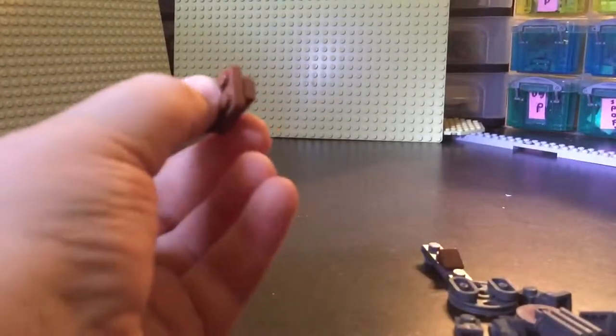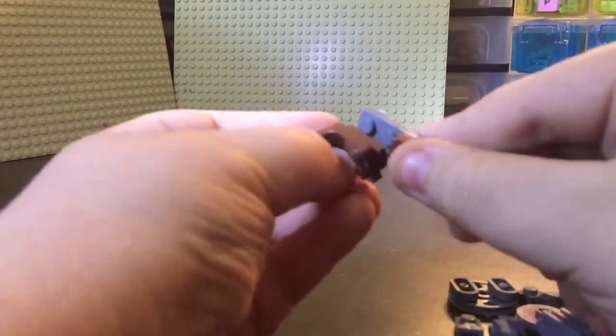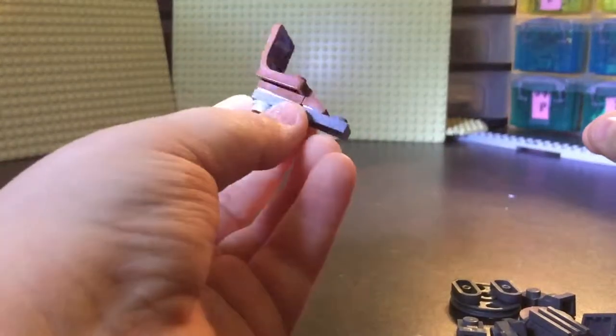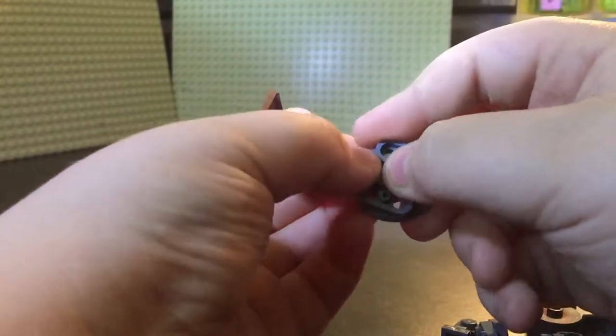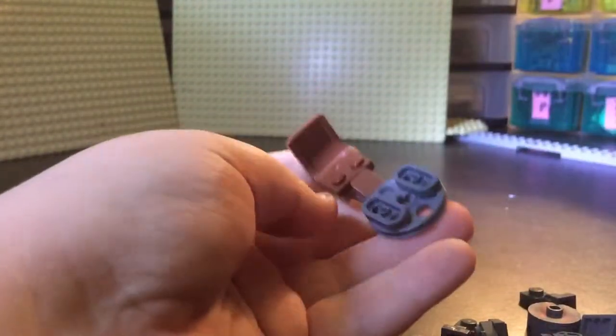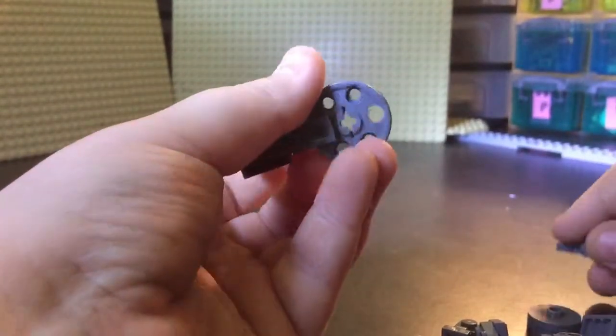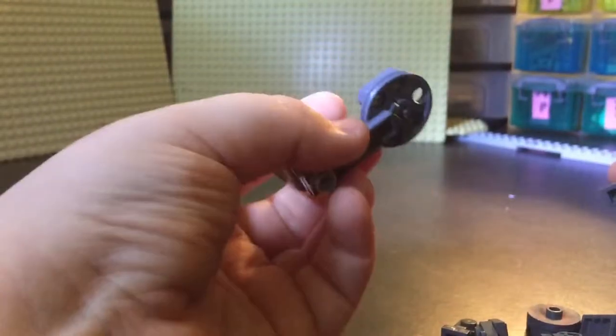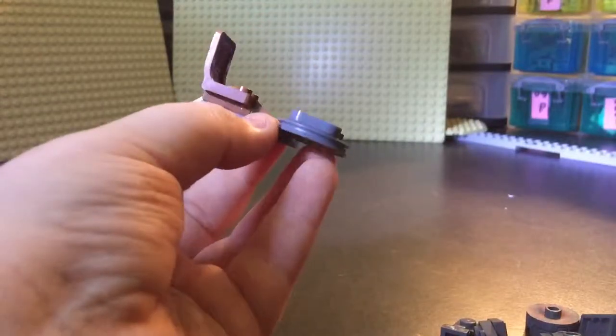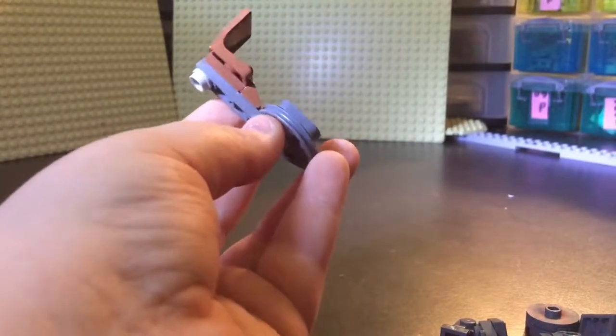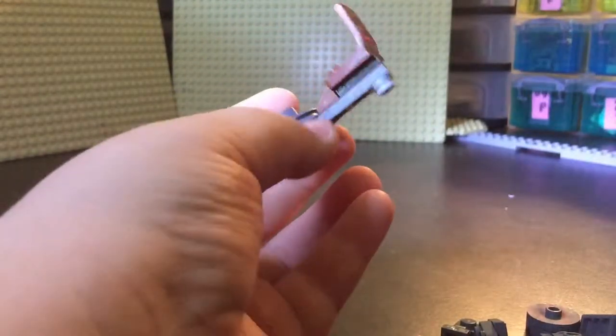First, you grab the chair assembly and you add it on to this part. Then you grab this assembly and add up. This is a very simple build but it's really easy to pull.